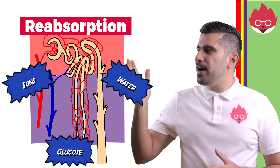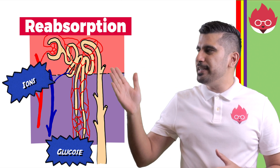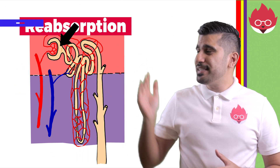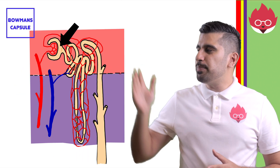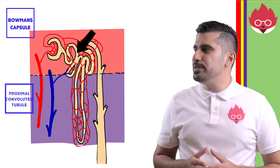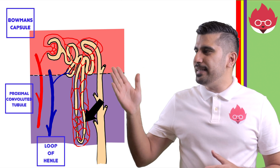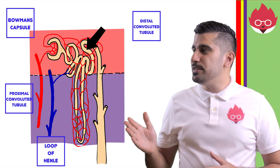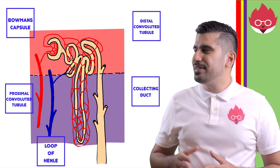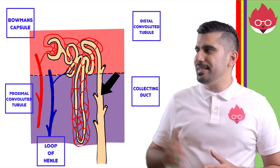The nephrons have five important regions: the Bowman's capsule, the proximal convoluted tubule, the loop of Henle, the distal convoluted tubule and the collecting ducts.